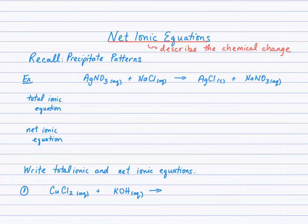Net ionic equations. So far we've learned how to write balanced chemical equations for double displacement reactions. We've also done single displacement, synthesis, and decomposition. Now what we're looking at is a net ionic equation — a formative equation that describes the chemical change that occurs in a reaction. This can be used for any type of reaction, and we'll begin with something familiar: one of the reactions from the precipitate patterns lab.